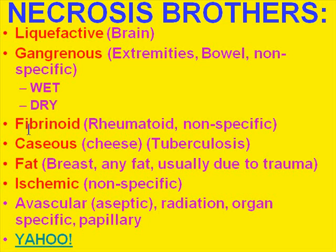Fibrinoid necrosis is used particularly in rheumatic or autoimmune diseases to describe changes seen in the walls of blood vessels — it almost always specifically refers to rheumatoid blood vessels or autoimmune diseases. Caseous necrosis is seen in tuberculosis; the word caseous means cheese, and it is a gross, not microscopic, finding — the tissue has the consistency of cheese. Fat necrosis is necrosis of fat usually due to trauma. Ischemic necrosis is due to lack of blood or oxygen, and avascular necrosis is almost identical to ischemic necrosis.